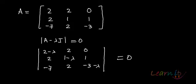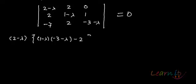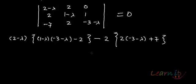This determinant has to equal 0, giving us a cubic polynomial in lambda. Expanding along row 1: (2 minus lambda) times the determinant of the remaining elements after eliminating the first row and first column, giving (1 minus lambda)(minus 3 minus lambda) minus 2, minus 2 times the determinant (2)(minus 3 minus lambda) plus 7, plus 0 because the third element in row 1 is 0.